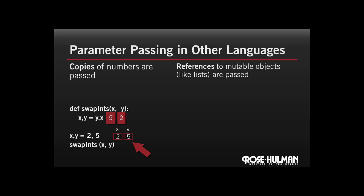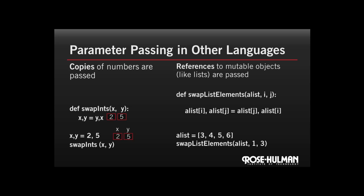On the other hand, for immutable objects like lists, just a reference to the object is passed into the function. So let's look at a second example, very similar.